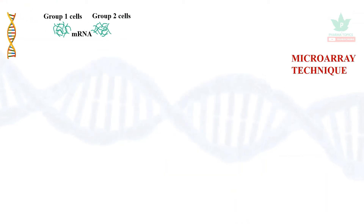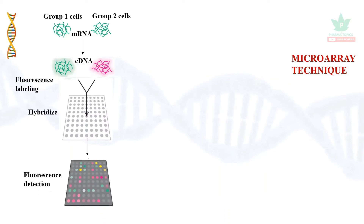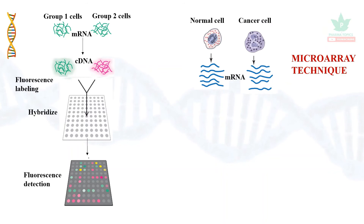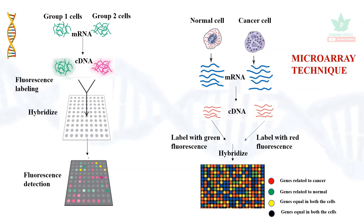Fluorescence labeling and hybridization example: we take a normal cell and a cancer cell, extract mRNA, and use reverse transcriptase to produce normal cDNA and cancerous cDNA. Normal cells are tagged with green fluorescence and cancerous cells with red fluorescence. After hybridization, genes related to cancer appear red, genes related to normal cells appear green, genes expressed equally in both cells appear yellow, and genes absent in both appear black.